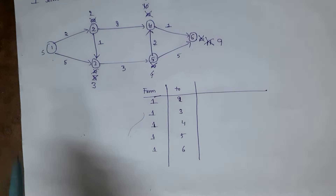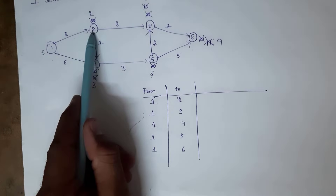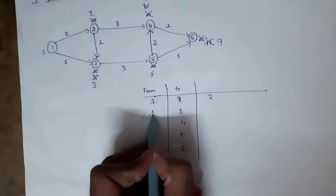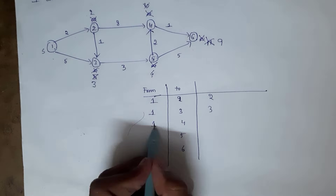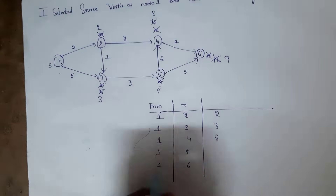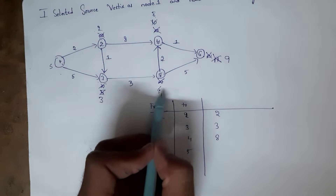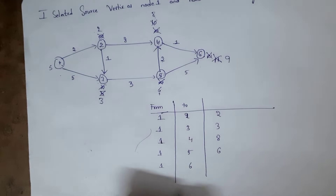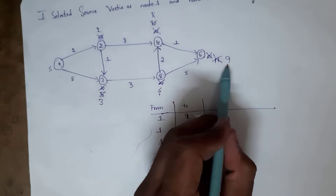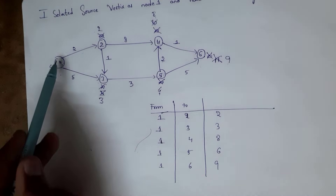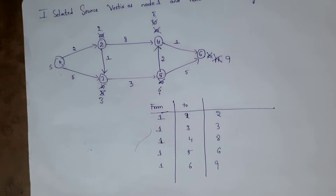This is the shortest distance from node 1 to all other nodes. Now we need to write the table for this. Distance from node 1 to node 2 is 2, from node 1 to node 3 is 3, from node 1 to node 4 is 8, from node 1 to node 5 is 6, and from node 1 to node 6 is 9. We selected node 1 as the single source node and found the shortest distance to all other nodes.